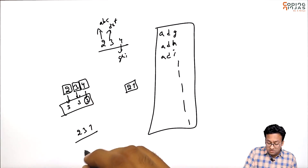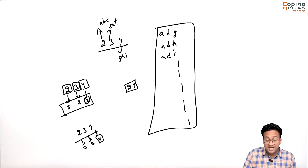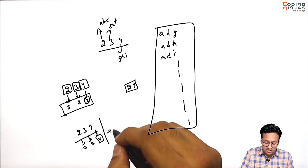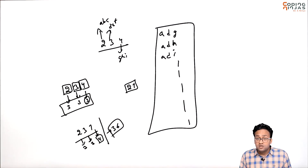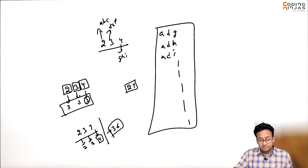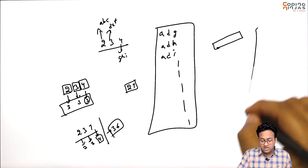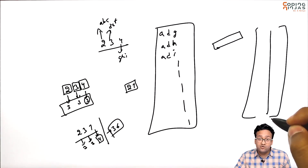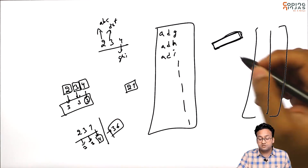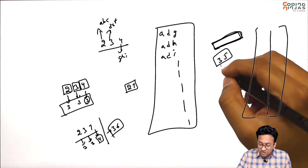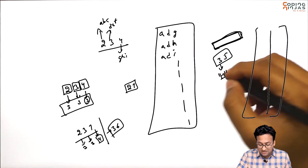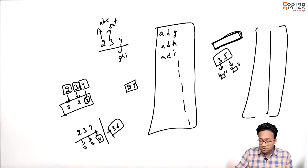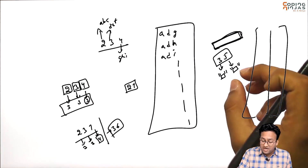If I give you 237 instead, 7 has 4 possible characters, so the number of output strings will be 3 × 3 × 4 = 36, not 27. The problem is clear: given a number, return a list containing all strings you can form using the corresponding keypad characters, choosing one character per digit.